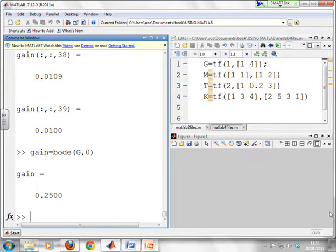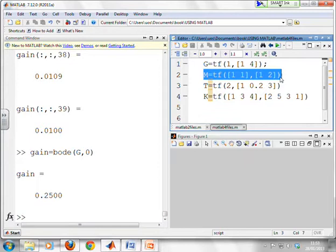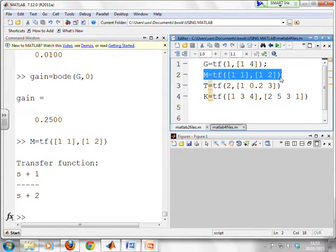Let's try a different transfer function. I've got them stored up here for us. So let's bring that M across. So there you are. M equals S plus 1 over S plus 2. Now, if I was to calculate M of 0, that is, set S equal to 0, you can see clearly I would get 1 over 2, or a half.